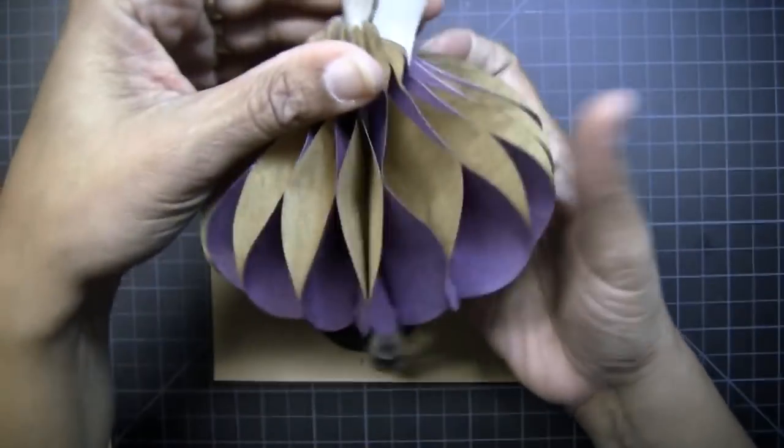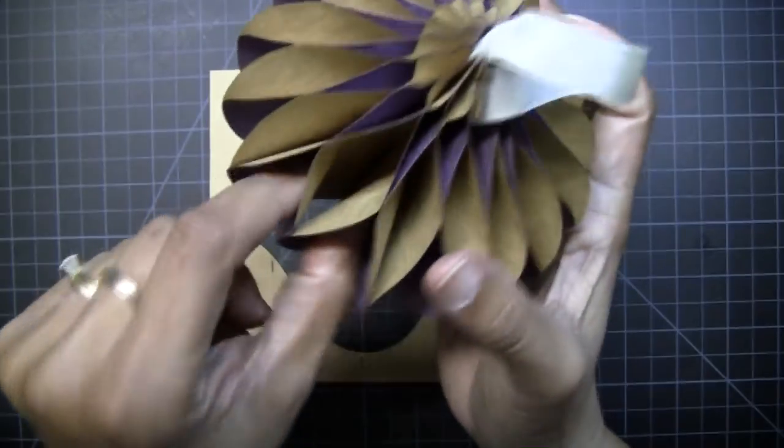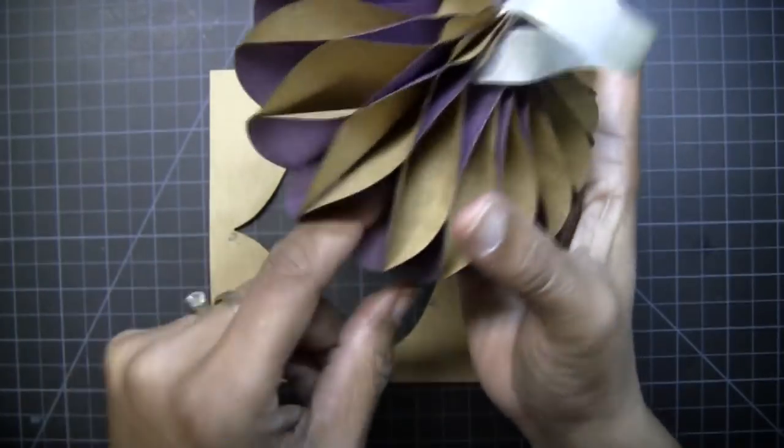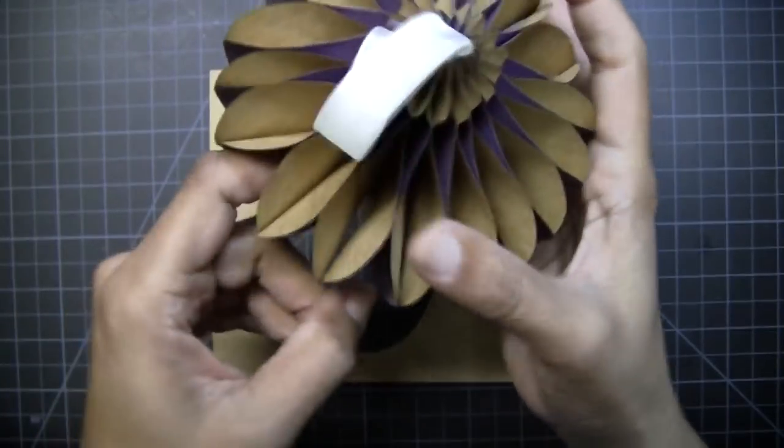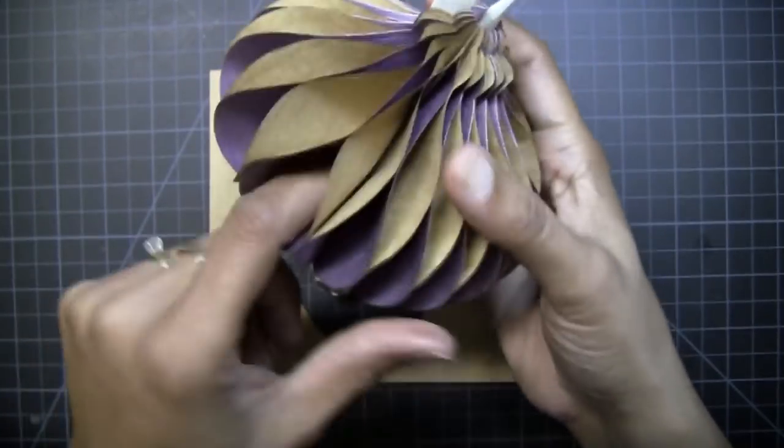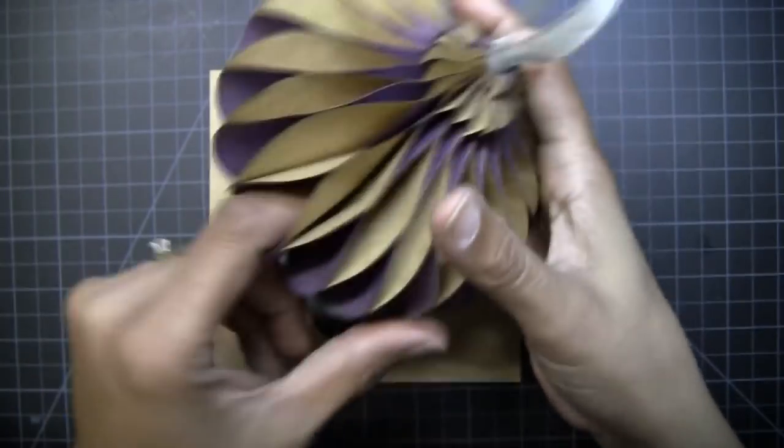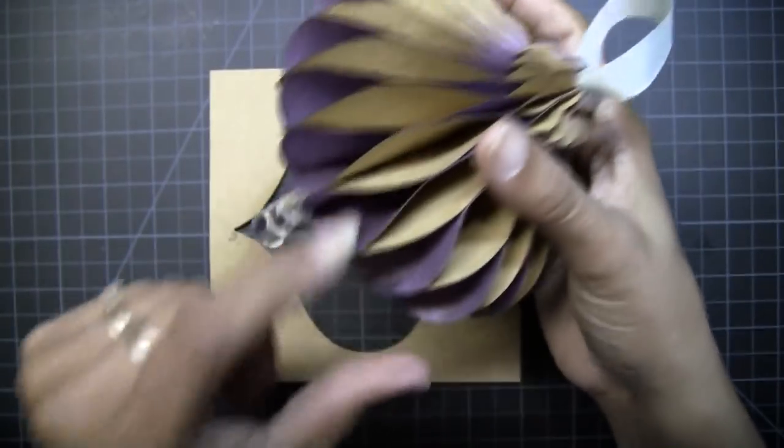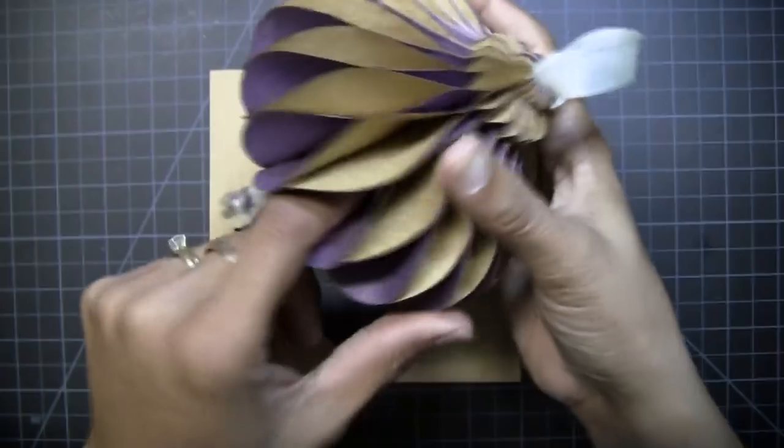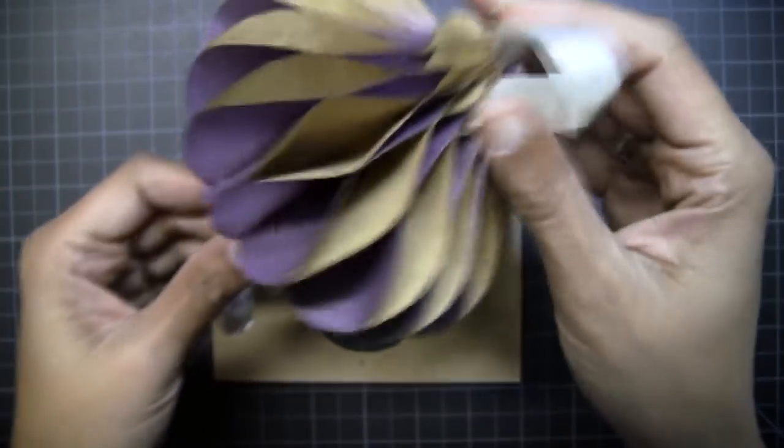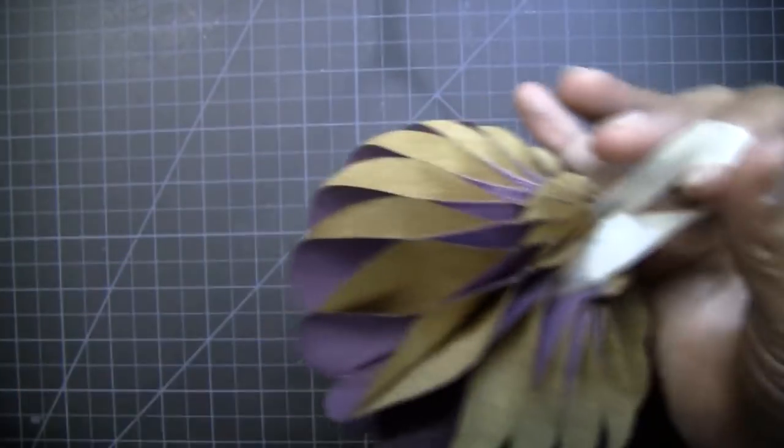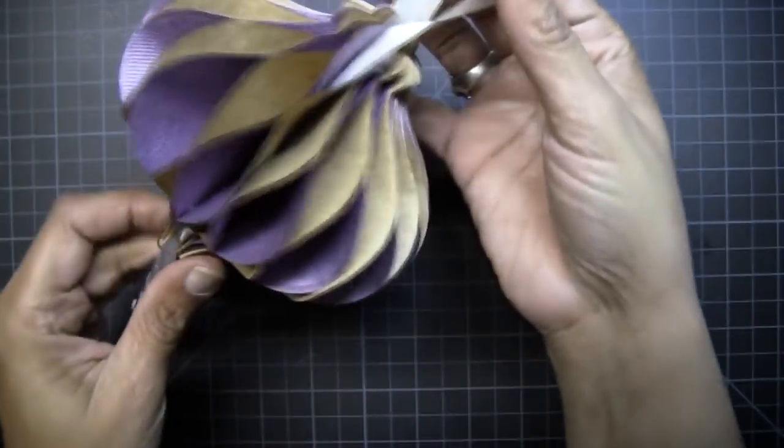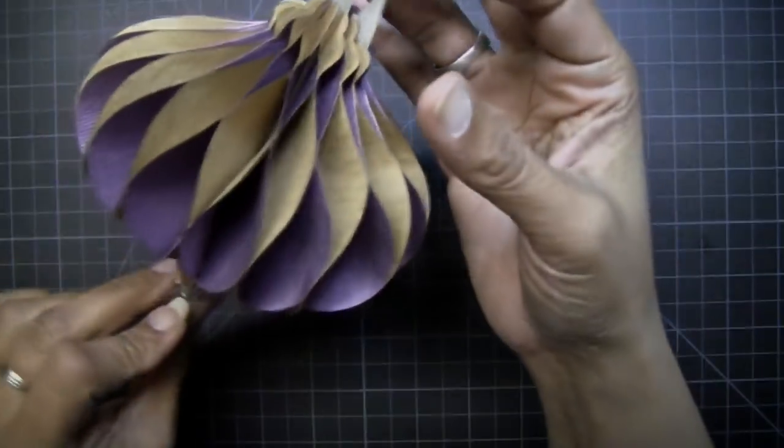And then the last thing to do is take and put your finger in each one of these openings and it's just going to make the paper relax a little bit in the state that it's going to be in now that it's unfurled. And that's it, that is your honeycomb ornament.